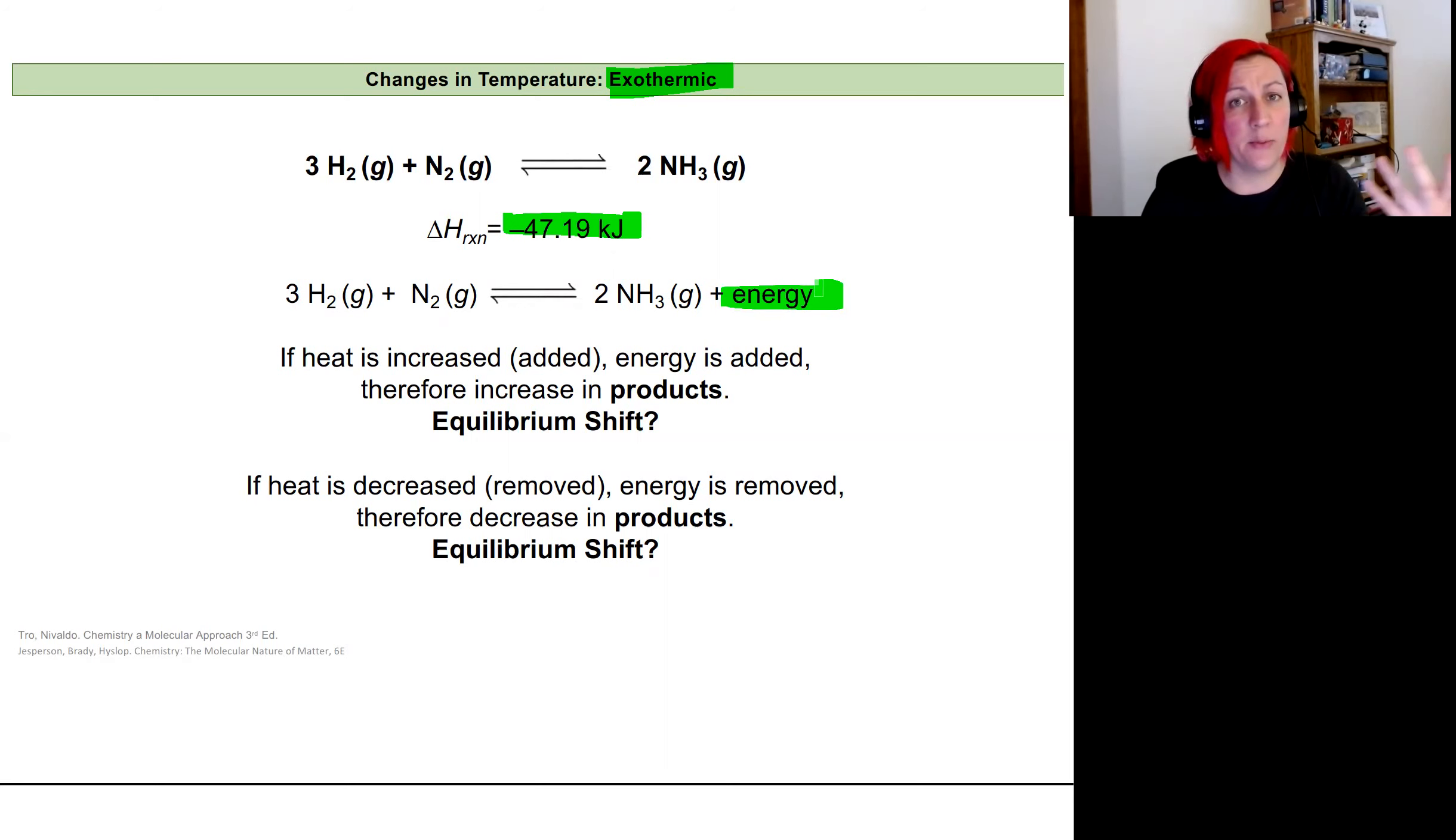Think about this the way we did concentration. If I'm going to increase one of my products, I know that I'm going to shift to the left and form more reactants. So if I increase the temperature on this reaction, I'm going to shift this reaction towards the reactants to compensate for all that extra heat that is in the system.